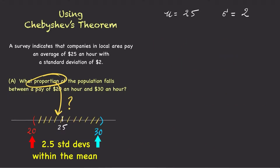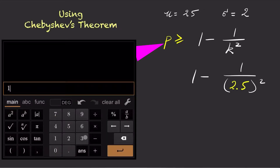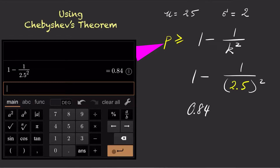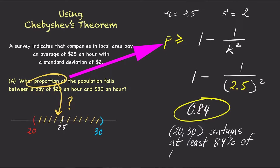We will have to use Chebyshev's theorem instead. Chebyshev's theorem says that the proportion of the population within k standard deviations of the mean is at least 1 minus 1 over k squared. Since k equals 2.5 in this situation, plug in 2.5 for k, then use the calculator to evaluate. The answer is 0.84 — in other words, at least 84% of companies in the local area pay between $20 an hour and $30 an hour.